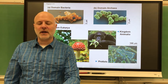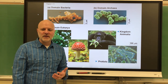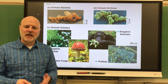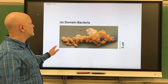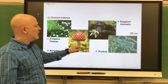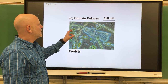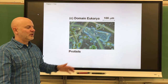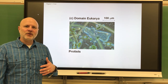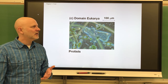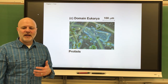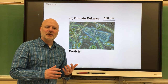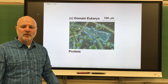Now let's look at domain Eukarya. These can be single-celled or multicellular organisms, and they are eukaryotic — these are cells that have a nucleus. The first group are the protists. This isn't a single kingdom; there are many kingdoms here. The commonality that all protists share is that they are all single-celled. You can find plant-like protists like kelp, animal-like protists like an amoeba, and fungal-like protists called slime molds — single-celled colonial organisms.